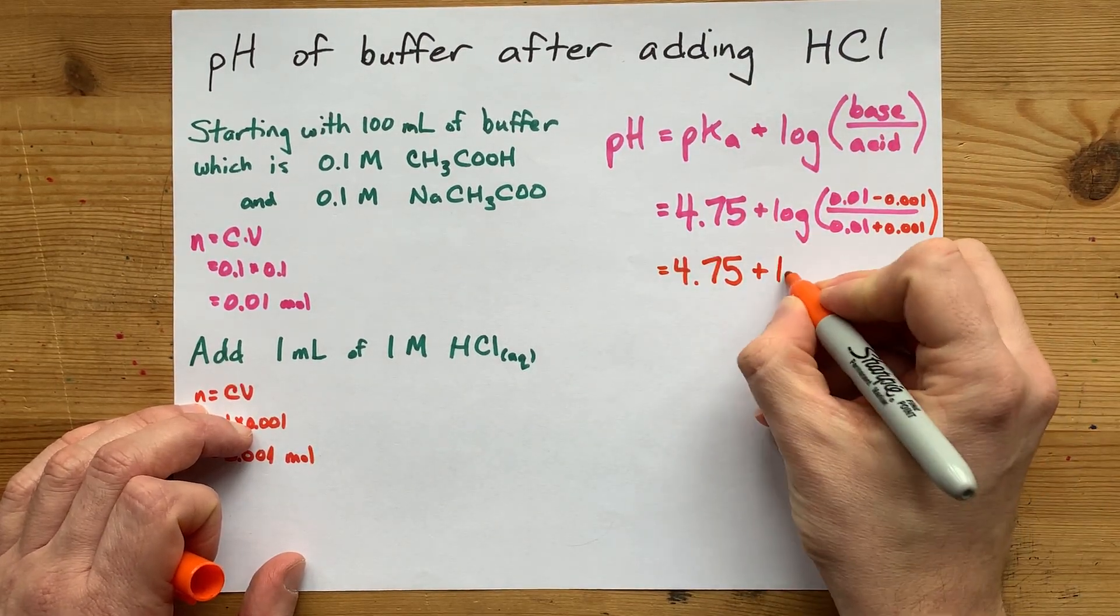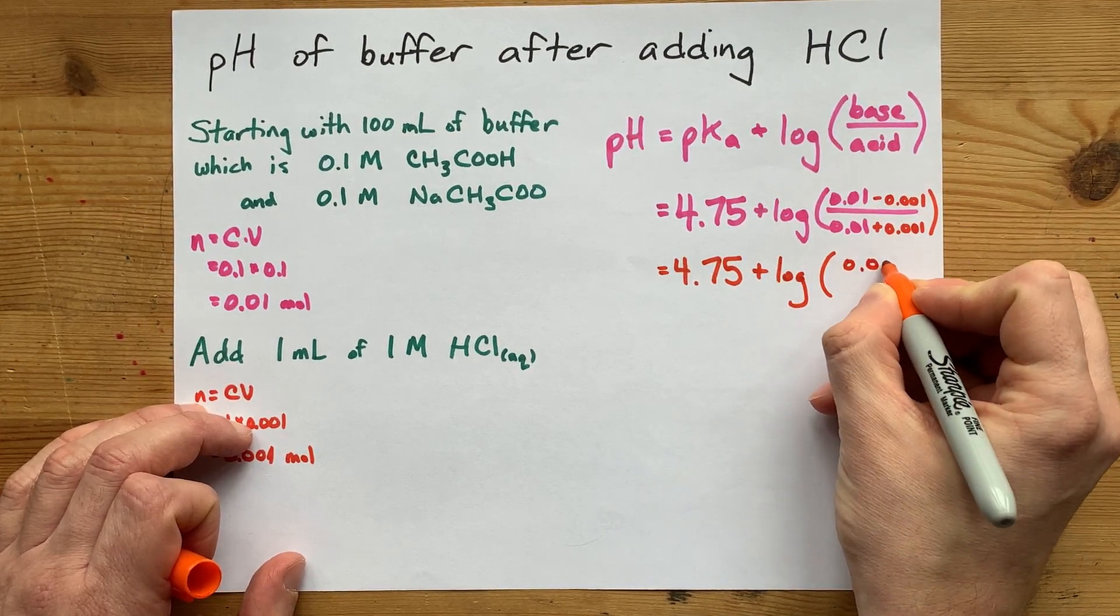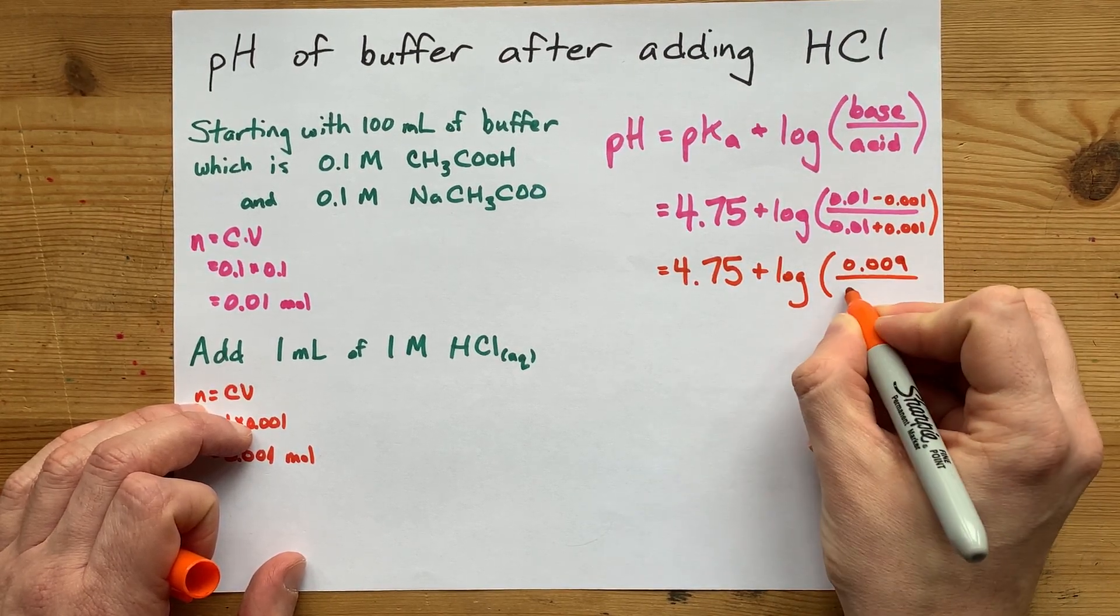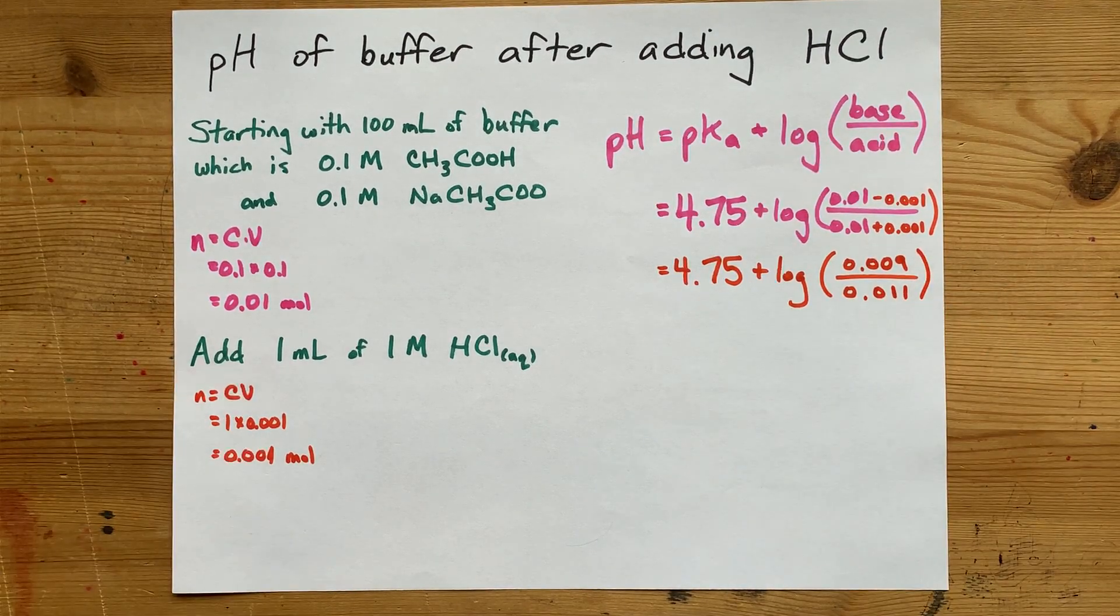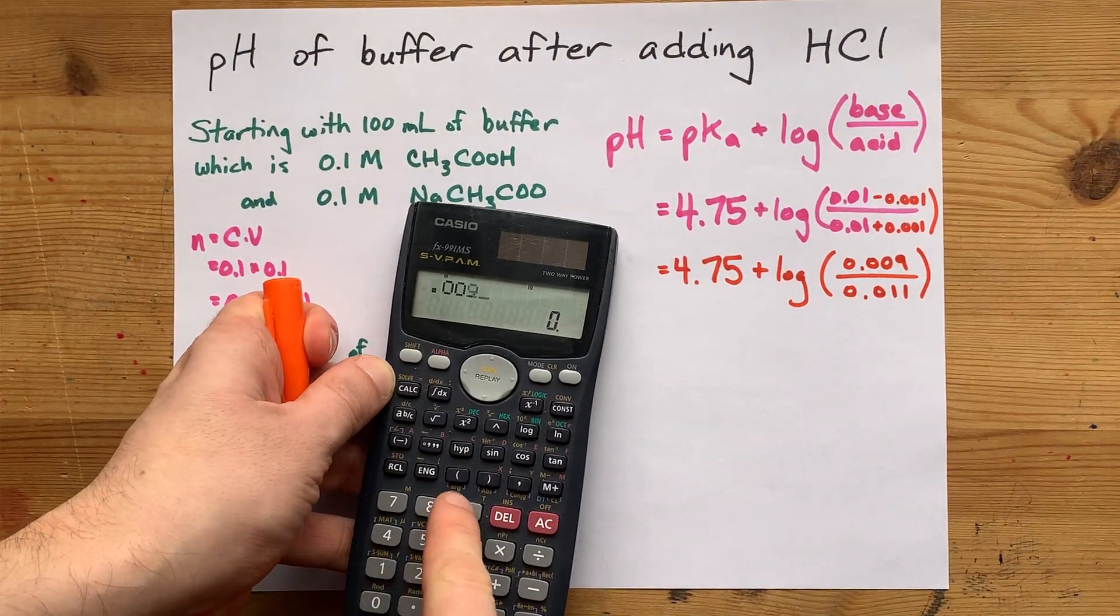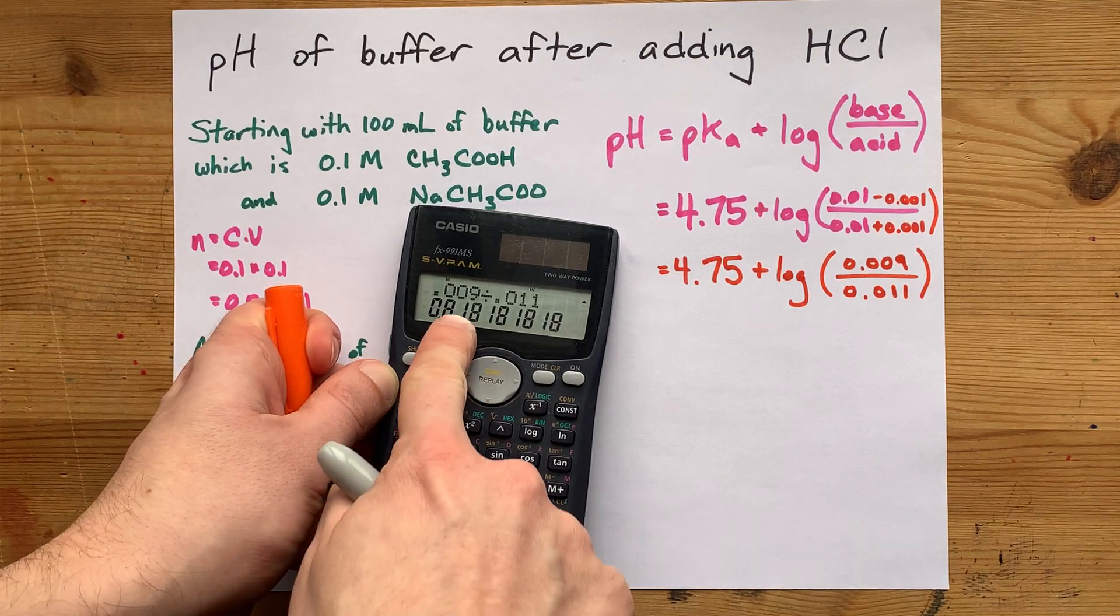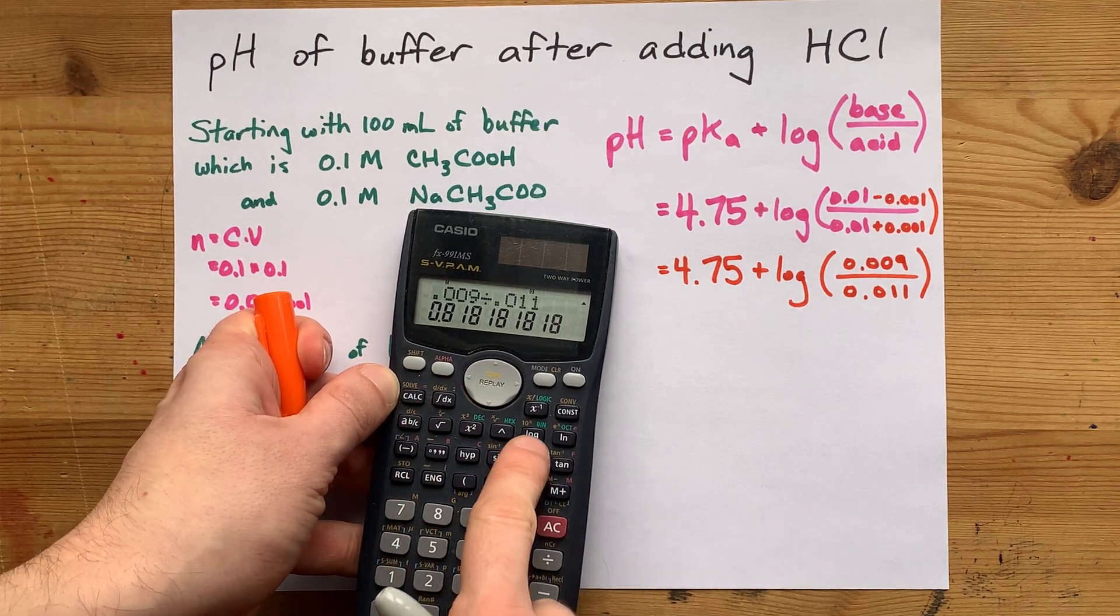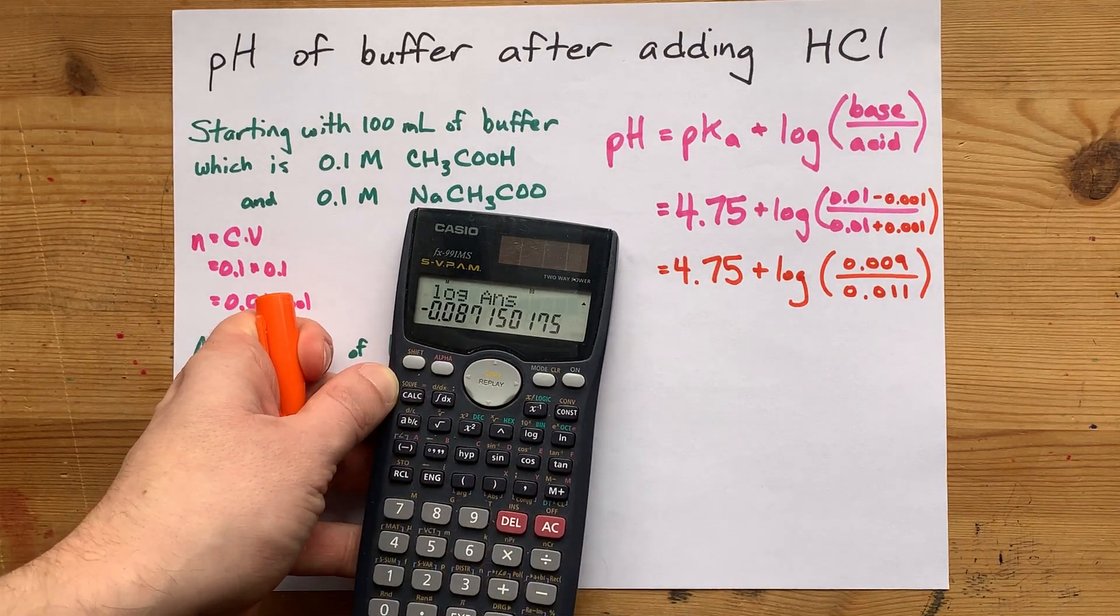And here I'm actually going to need my calculator. I've got to do 0.009 over 0.011. Let's go see what happens when I do that. 0.009 divided by 0.011 gives me 0.8, and I'm going to take the logarithm of that, gives me a negative answer.